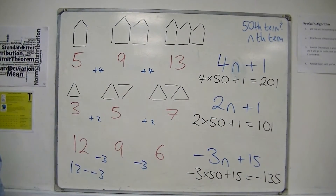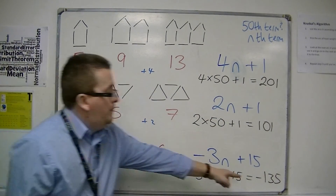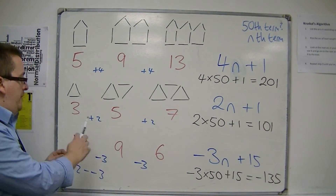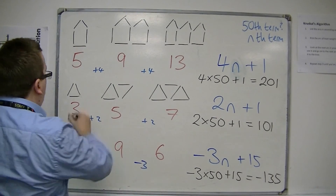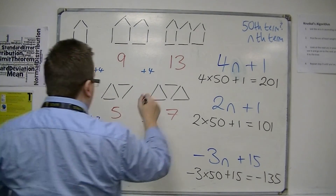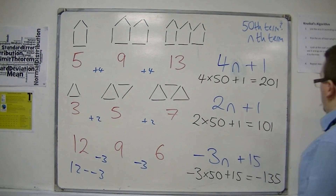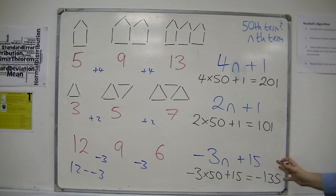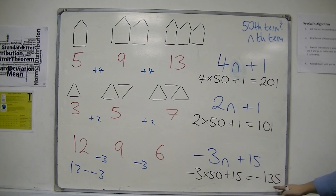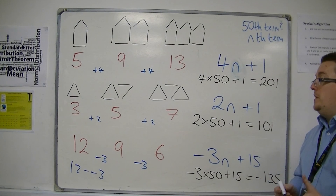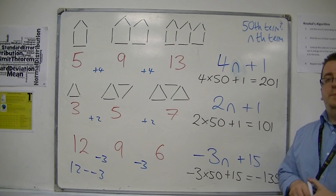So that would be the 50th term in this sequence. If I wrote out the sequence 12, 9, 6, 3, 0, minus 3, and so on and so forth, then the 50th one in that sequence would be minus 135. And that's how we use the nth term.